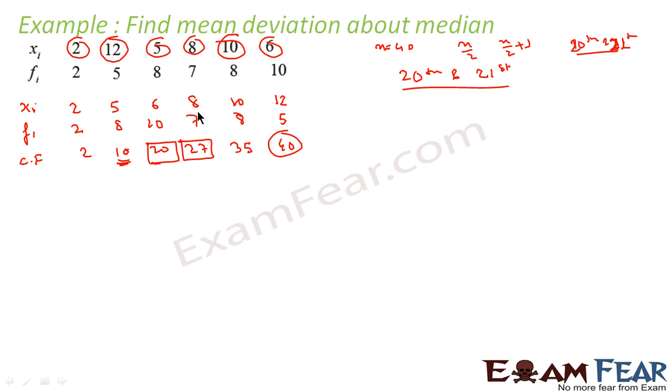That means 21, 22, 23, everything is in this box. So the 20th term is 6 and the 21st term is 8. So the median in my case will be 6 plus 8 divided by 2, that is 7.